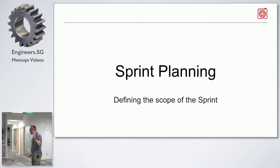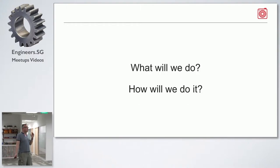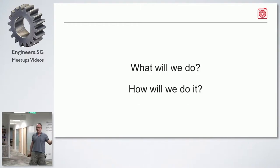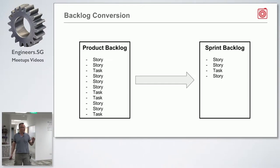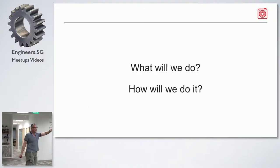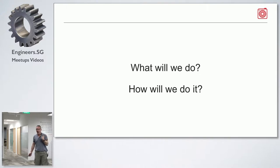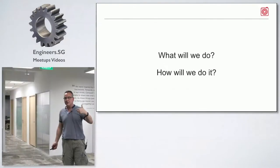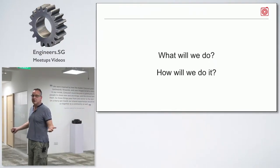Sprint planning is the process of defining the scope of the sprint — essentially asking: what will we do, and how will we do it? These are owned by different people. 'What will we do' is owned by the product manager. 'How will we do it' is owned by the product team. Those are the two key questions.